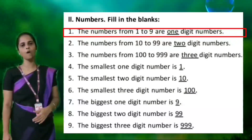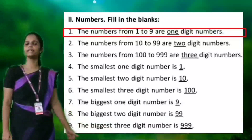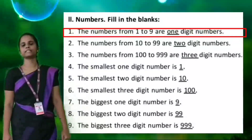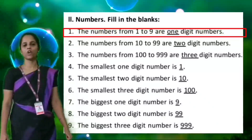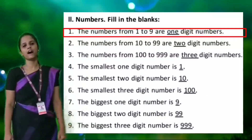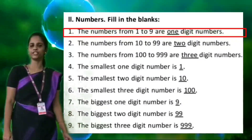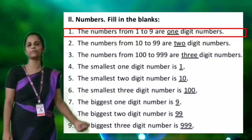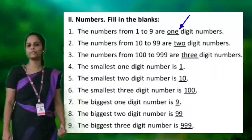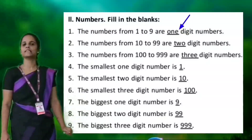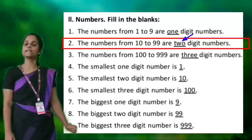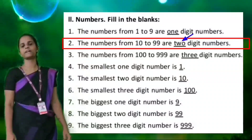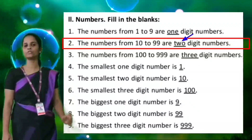The numbers from 1 to 9 are one digit numbers. In the blank you should write O-N-E, 1. Second: the numbers from 10 to 99 are two digit numbers, T-W-O, 2.